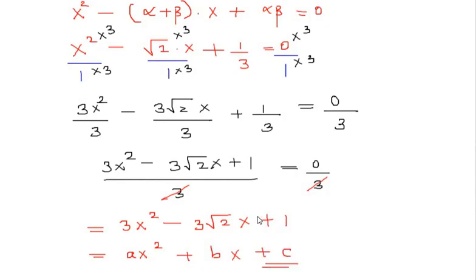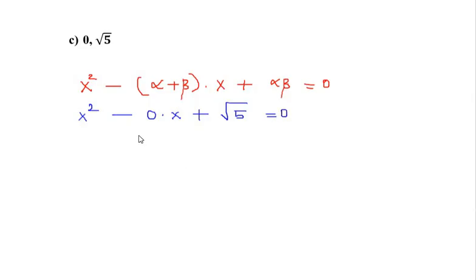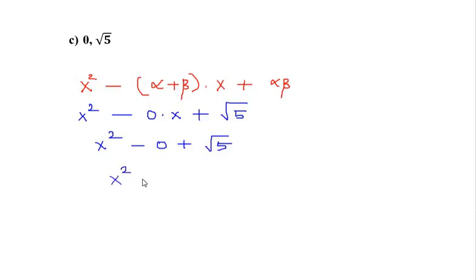Now part C: 0 and √5. Here 0 represents the sum of the roots and √5 represents the product of the roots. Using the standard format: x² - 0·x + √5, which simplifies directly to x² + √5, since there are no fractions involved.